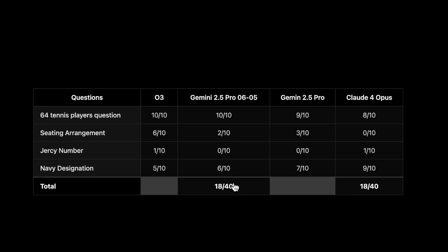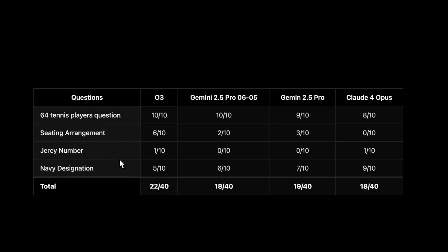Looking at total scores: Claude 4 Opus gets 18, the older Gemini 2.5 Pro gets 18, the newer Gemini 2.5 Pro gets 19, and OpenAI o3 leads with 22. There's a clear improvement in reasoning for the new Gemini 2.5 Pro, but it's still behind OpenAI o3 in my testing. If you have a ChatGPT Pro subscription and want to help test o3 Pro, leave a comment. We're also eagerly waiting for Grok 3.5, which seems to be taking its time.